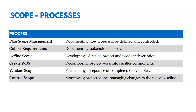Later, as we monitor the project, we're going to validate the scope — formalizing acceptance of completed deliverables. And then we're going to control the scope, monitor it, and manage changes to the baseline. We validate to get acceptance, and we control to monitor the scope and manage changes to it.